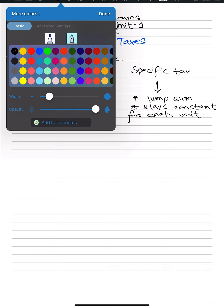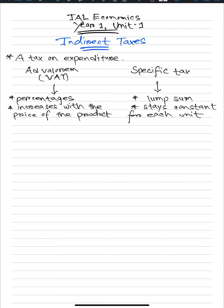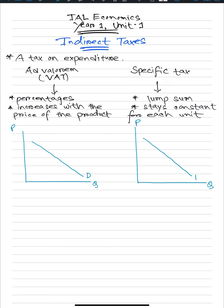Now let's move on to the diagrams for indirect taxes. As we said, there are two types: VAT and specific, so there will be two types of diagrams for each. Both diagrams say the same thing — they are just drawn in a very slightly different way. The y-axis is price and the x-axis is quantity being bought or sold. For ad valorem tax, taxes always affect the supply side. An increase in tax will increase costs of production, supply will decrease, and vice versa. The demand curve will always be unchanged — taxes will not affect the demand curve.